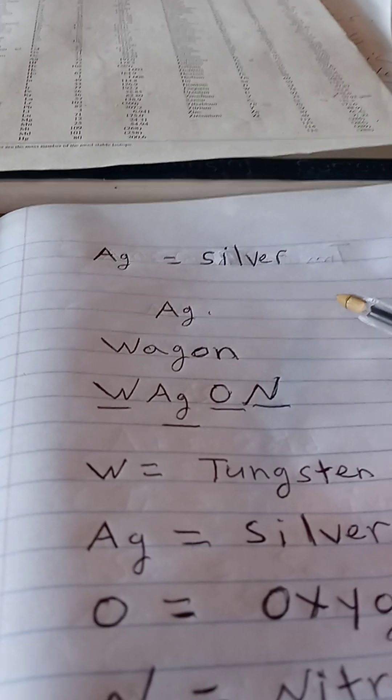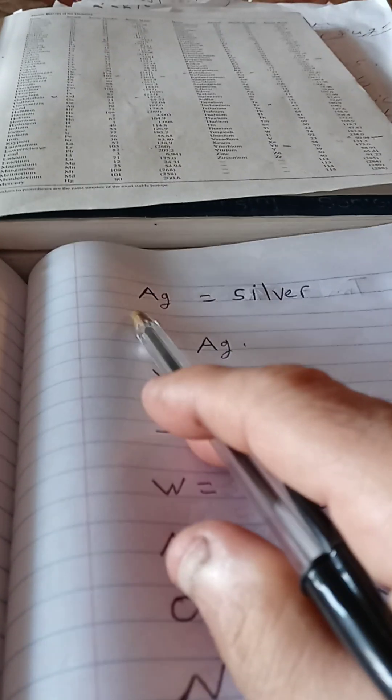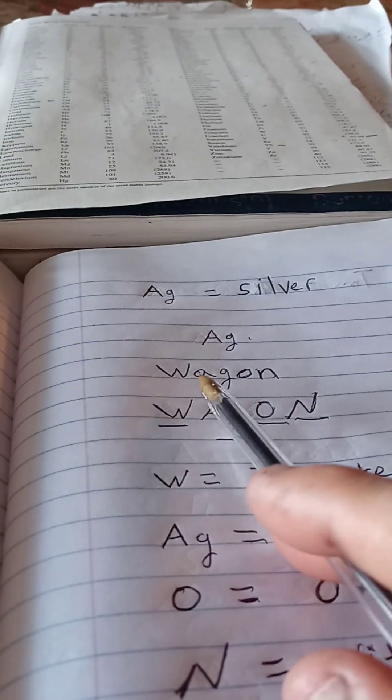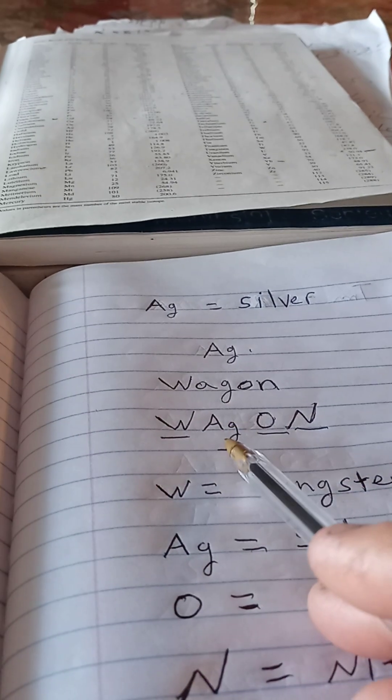See, you got the A, capital A and a G in wagon, right here, for silver.